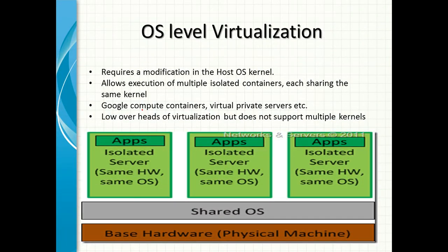The next concept is operating system level virtualization, or OS-level virtualization. The ideology is still the same — there is hardware or a physical machine consisting of a shared operating system. One operating system is shared among different apps, and all these apps work on different servers while sharing both the operating system and the hardware resources of the physical machine. Examples include Google Compute containers and virtual private servers.